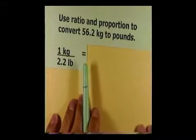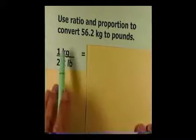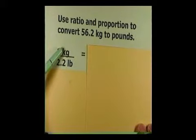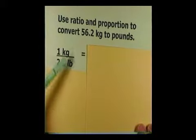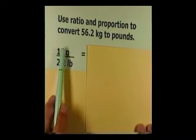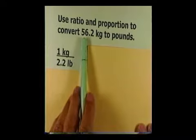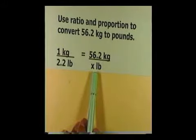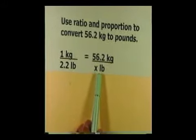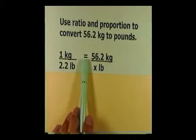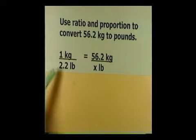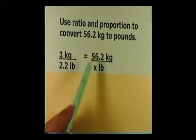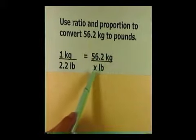That would equal the ratio of the question. In the given ratio, kilograms goes on top and pounds goes on the bottom. So: one kilogram is 2.2 pounds equals 56.2 kilograms is how many pounds? Notice with ratio and proportion it uses equals. The given ratio is what you've memorized — one kilogram is 2.2 pounds — and the question ratio is 56.2 kilograms is how many pounds.